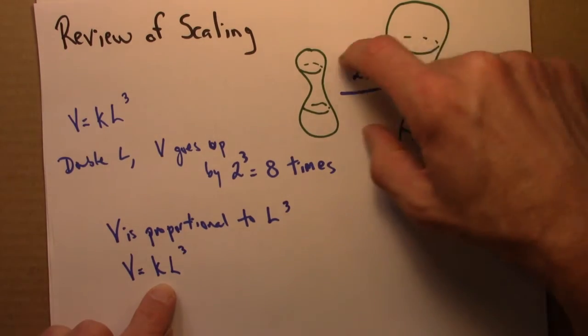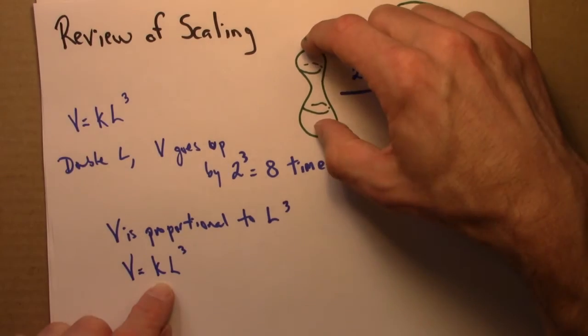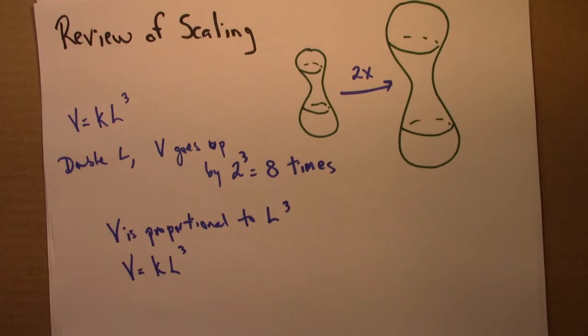L would be some length. It could be the height, it could be this radius or something.